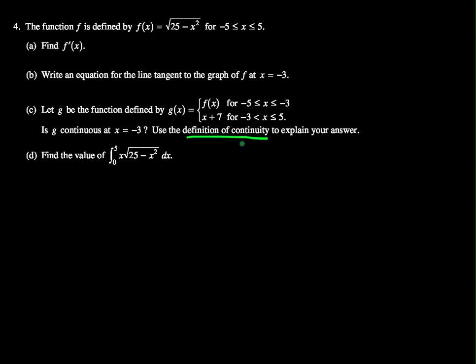So first off, definition of continuity, what is it? This right here simply states that g of x is continuous at x equals negative 3 if and only if the limit as x goes to negative 3 of g of x equals g of negative 3, and they have to be defined. This is the definition.